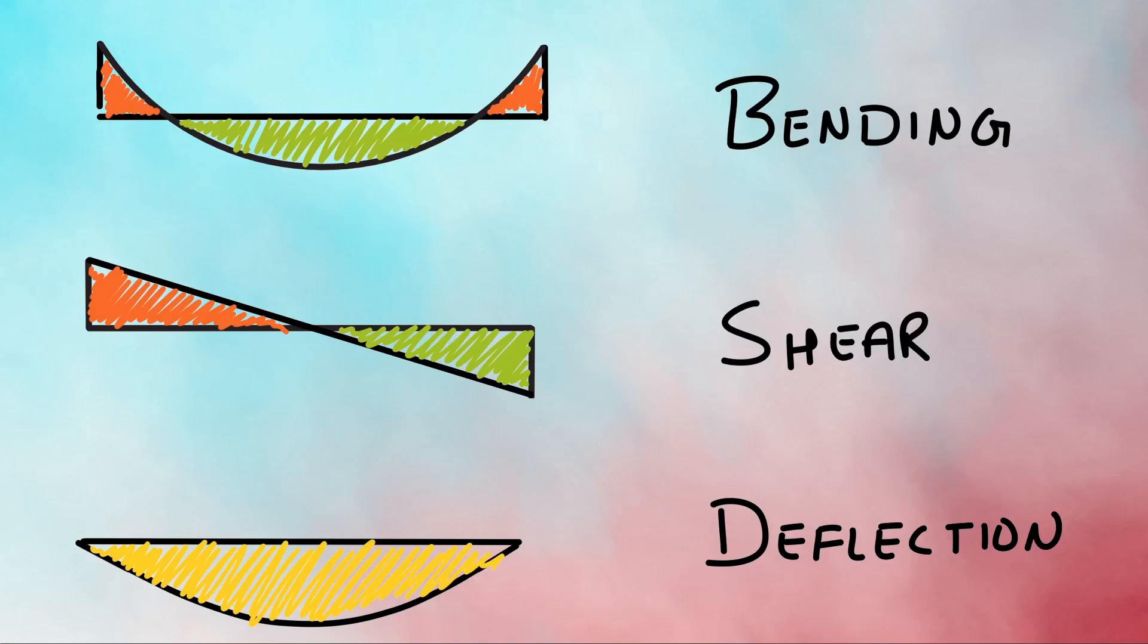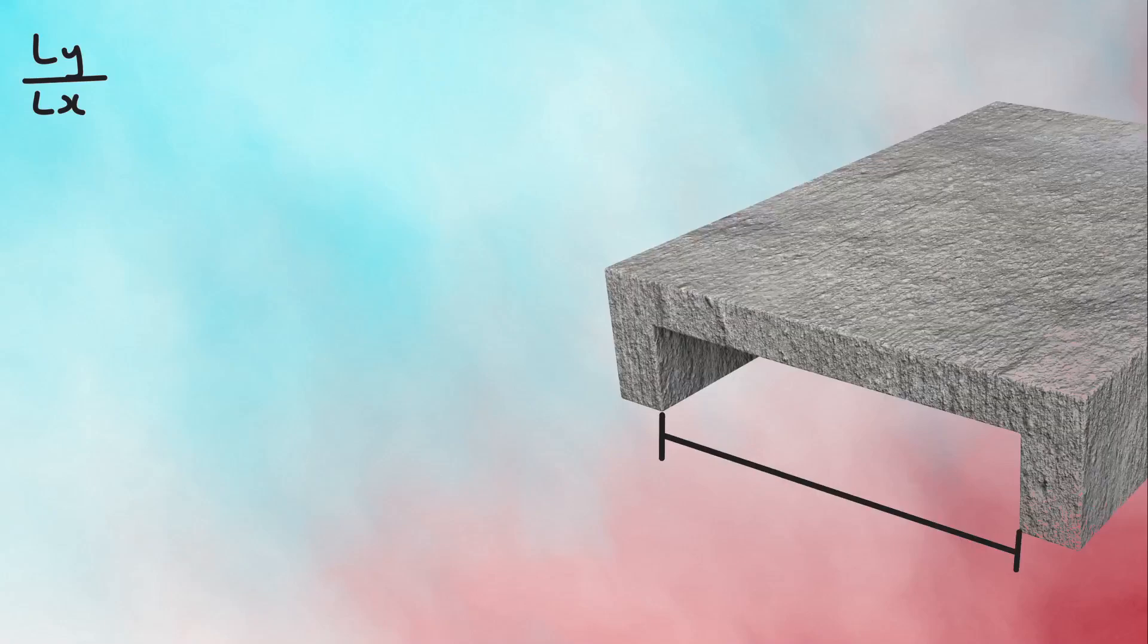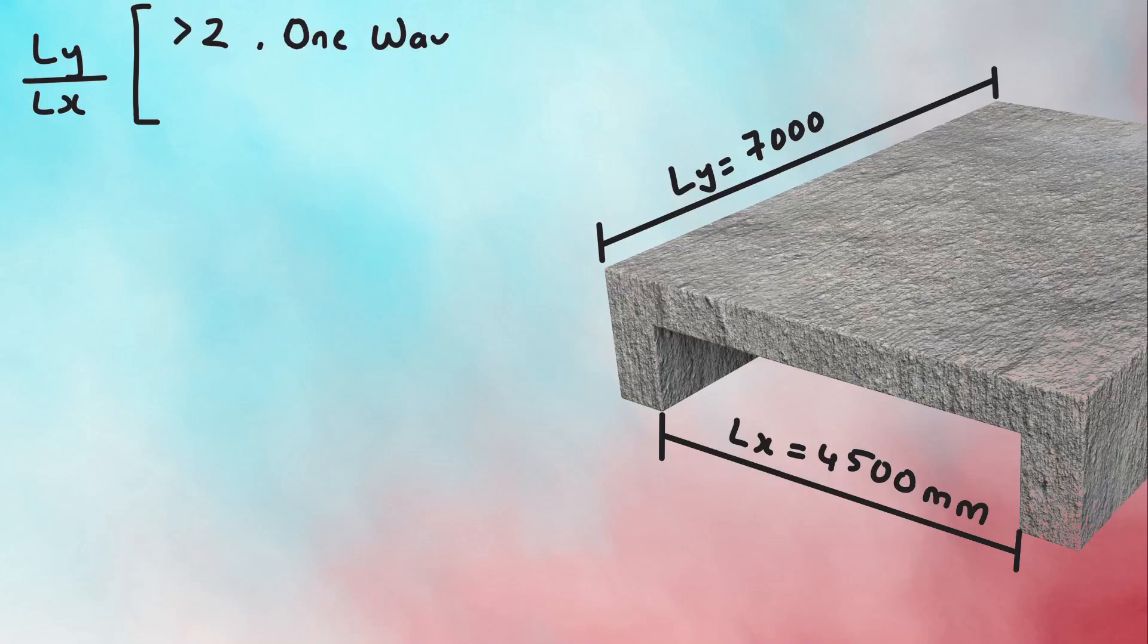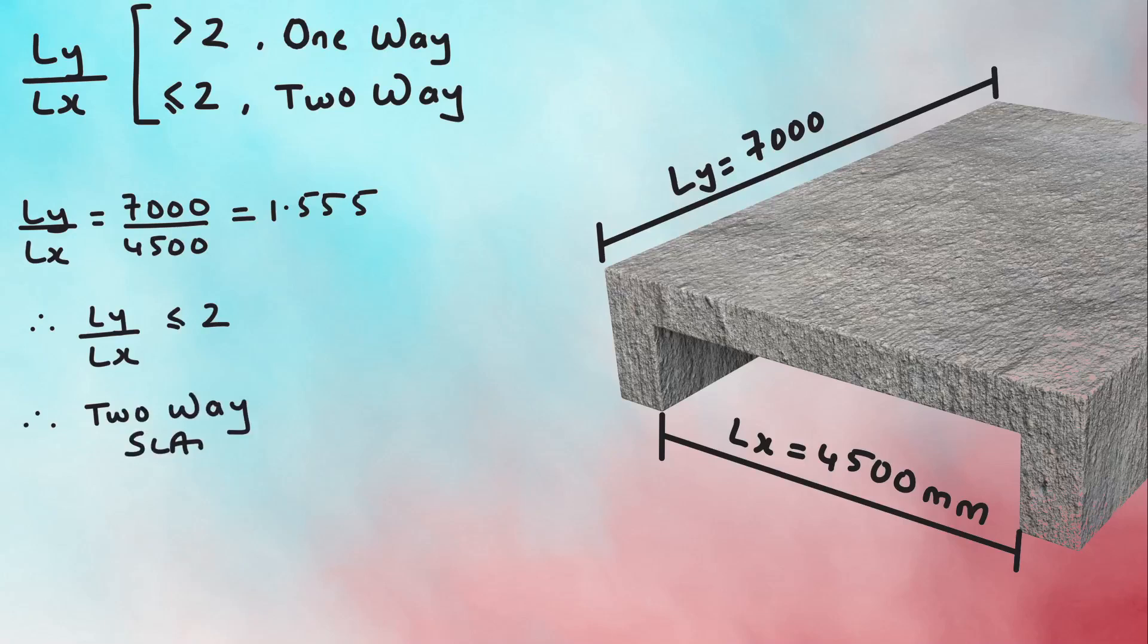Before checking for failures, we have to calculate if a slab is one-way or two-way by taking the ratio of Ly by Lx, that is longer length to the shorter length. If this ratio is greater than 2, then it's a one-way slab. But if it's less than or equals to 2, then it's a two-way slab. In our case, the ratio of Ly by Lx is less than 2, hence it's a two-way slab.